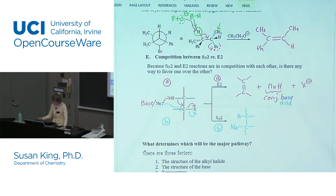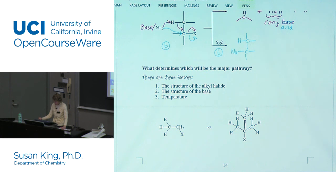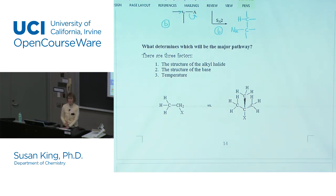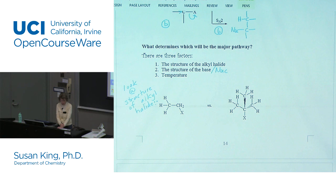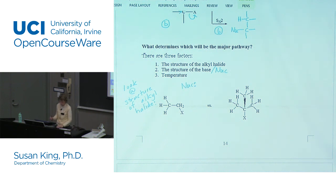So what determines which is going to be the major pathway? It is the structure of the alkyl halide, the structure of the base, and temperature. Temperature favors elimination. So let's first look at the structure of the alkyl halide. In this first substrate we have a primary alkyl halide, so it's going to be really easy for the nucleophile to come in and attack — not very much steric hindrance. The carbon bonded to the leaving group has two hydrogens and one R group attached, so it's primary. Attack at the carbon is unhindered.